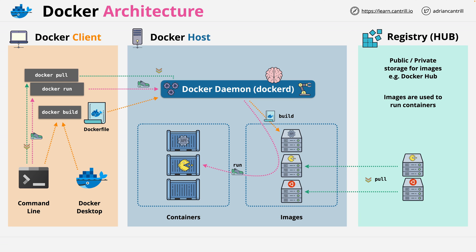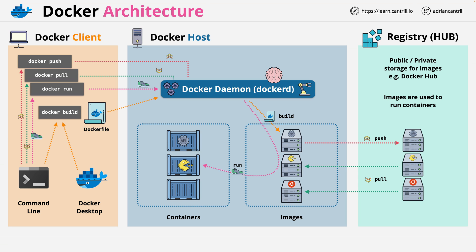Once containers are running, they can be stopped and started during their lifecycle. You can also, once you've created images, push these into a registry — for example, Docker Hub — and these can be public or private. You do this using the Docker push command. Docker push takes an image that's on the Docker host and pushes it into a registry.